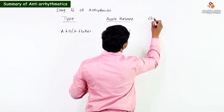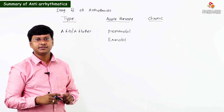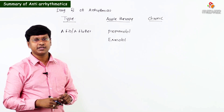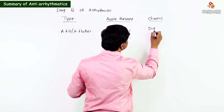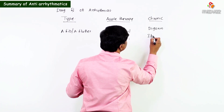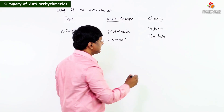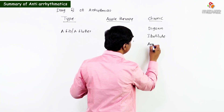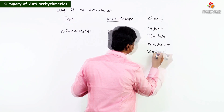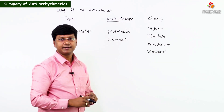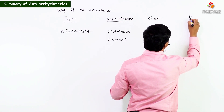For chronic therapy in atrial fibrillation or atrial flutter, the drugs used are digoxin, ibutilide, amiodarone, and verapamil.